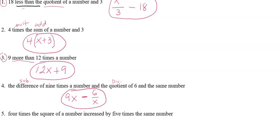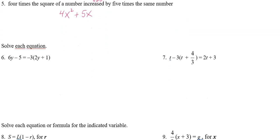Number five: four times the square of a number — four times some number squared — increased by, which is another way of saying addition, five times the same number. So I'm adding 5x to 4x². You could have used any variable.